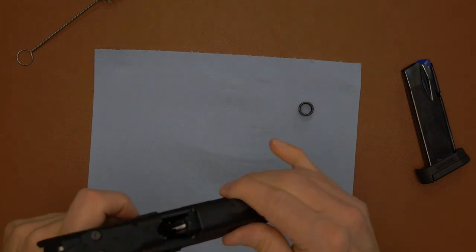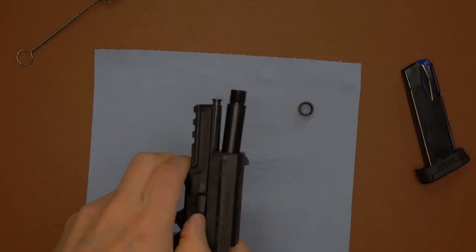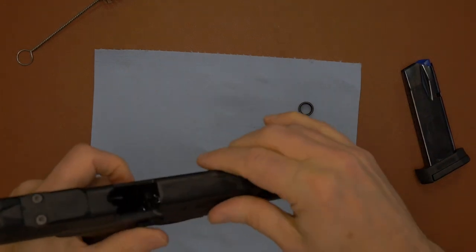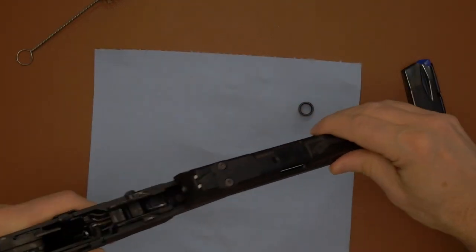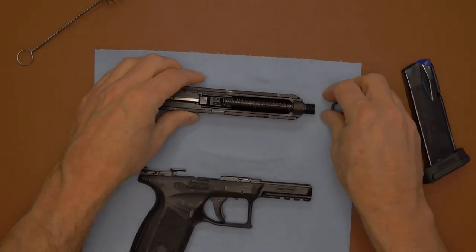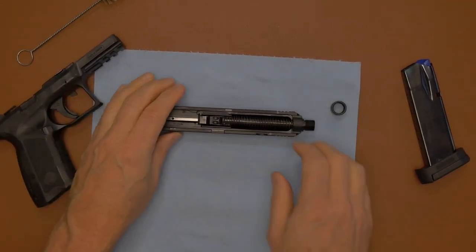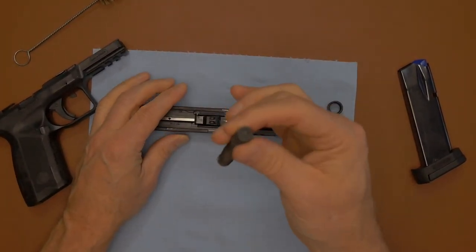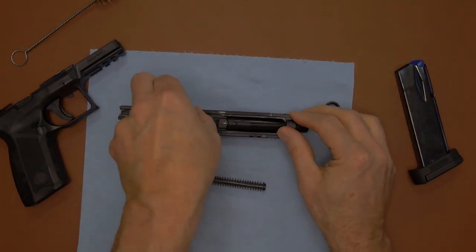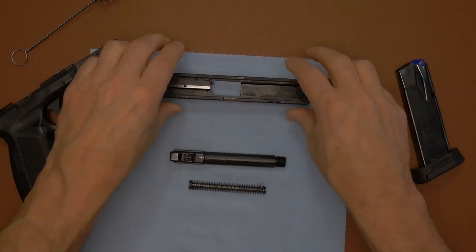So this lever here is similar to a Smith & Wesson and other firearms. So basically what you're going to do is you're going to lock it back, take that takedown lever, release the slide lock, pull the trigger, and then everything comes apart. And then from here, you're going to put the frame on here, take the recoil spring, take that out, and you're going to pop the barrel out.